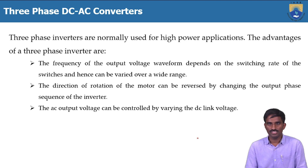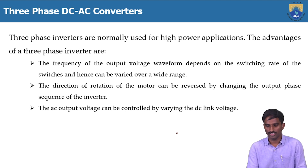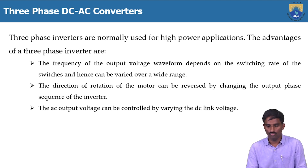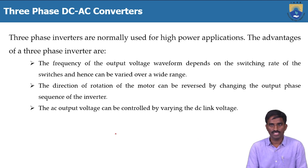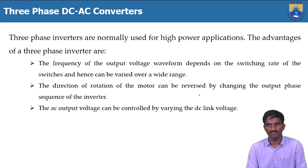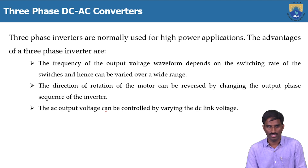The first advantage is that we can get different output frequencies by changing the switching rate of the different switches. That is another concept we will discuss later, using PWM control — pulse width modulation control. The second advantage is that the direction of rotation of the motor can be reversed by changing the output phase sequence of the inverter.